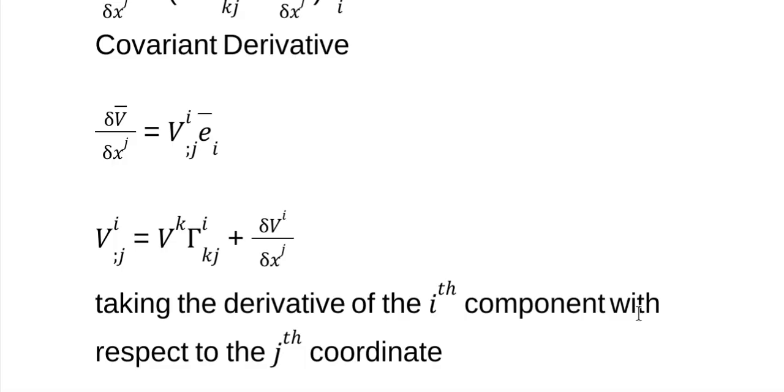Anyway, so this is the directional derivative definition, and it tells me by looking at it, I'm taking the derivative of the i-th component of this vector with respect to the j-th coordinate. That's what it's telling me, right? The i-th component of the vector with respect to the j-th coordinate.